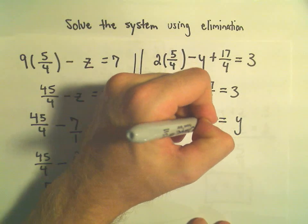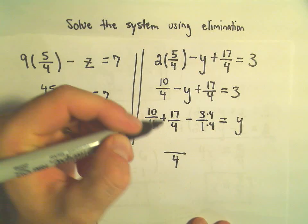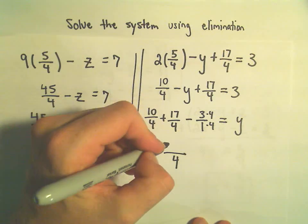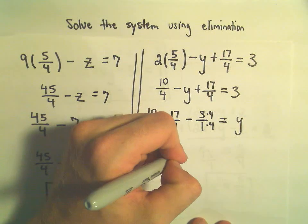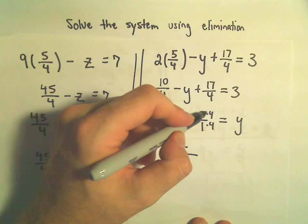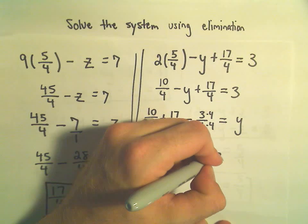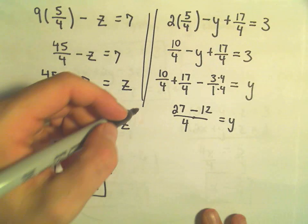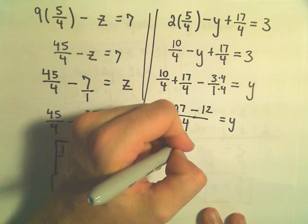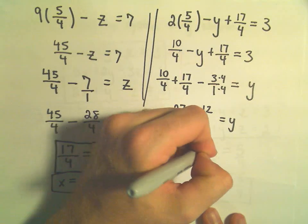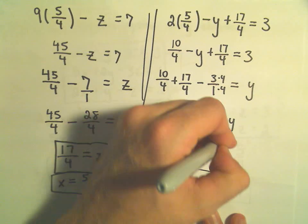And then on the left side, we would have 10 plus 17, which would be 27. And then it looks like we would get minus 3 times 4, or 12. That would be our y value. And if we simplify, 27 minus 12 would be 15 over 4. And that's our y value.